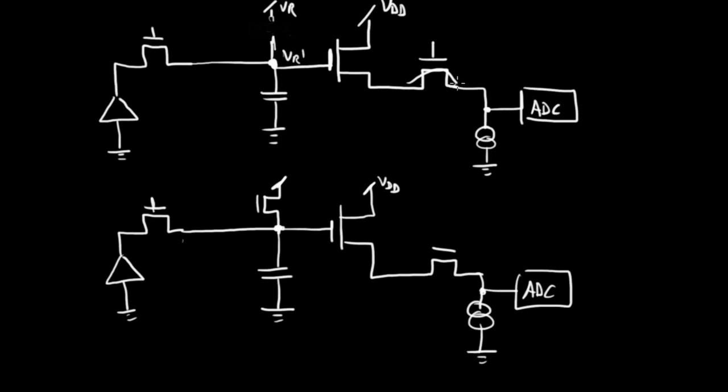So what will show up here before the ADC is hopefully something approximating VR prime, and that will come out and be our sample one, our reset sample, reset sample. And let's say this is the state at time zero.